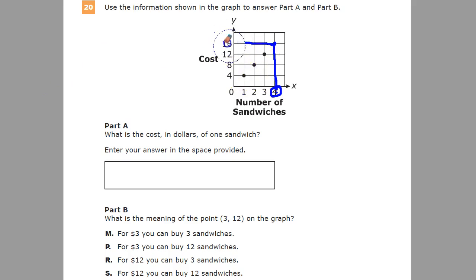Now the first question is, what is the cost in dollars of one sandwich? You'd be silly not to go to the number of sandwiches one and just draw the line up until you found your point. There it is. And then go to the corresponding value on the Y-axis, and it's four dollars. Some good sandwiches. So four dollars there.